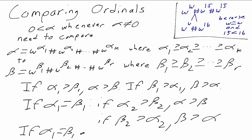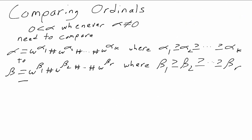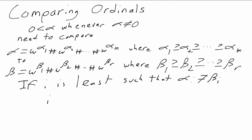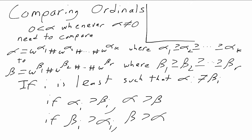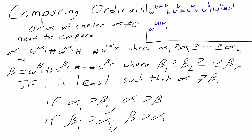And this just keeps going — we look for the smallest index i such that alpha i is not equal to beta i. If alpha i is greater, then alpha is the larger ordinal; if beta i is greater, then beta is larger. For example, comparing omega to the omega plus omega to the omega plus omega to the omega plus omega to the 6 plus omega to the 4 plus omega to the 1 with omega to the omega plus omega to the omega plus omega to the omega plus omega to the 6 plus omega to the 6 plus 1: the first four terms are equal, and at the fifth term, 6 is bigger than 4, so the second ordinal is the bigger one.